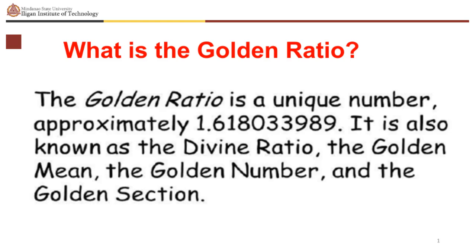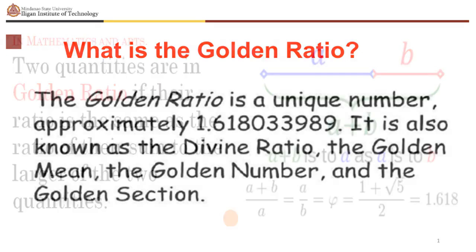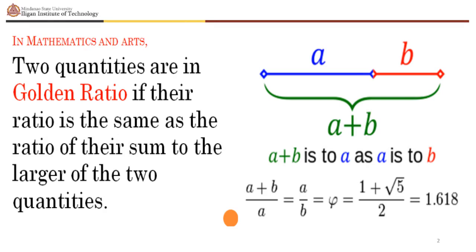What is the Golden Ratio? The Golden Ratio is a unique number, approximately 1.618033989. It is also known as the Divine Ratio, the Golden Mean, the Golden Number, and the Golden Section. In mathematics and arts, two quantities are in golden ratio if their ratio is the same as the ratio of their sum to the larger of the two quantities.